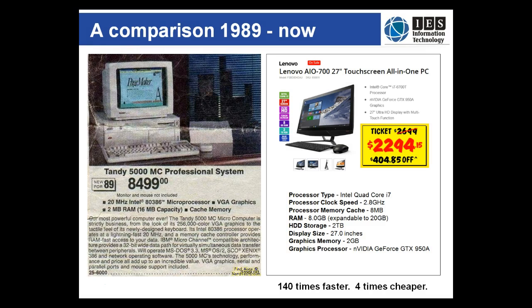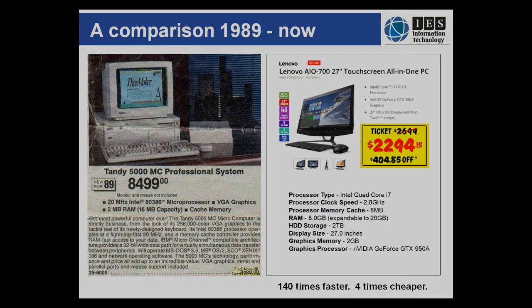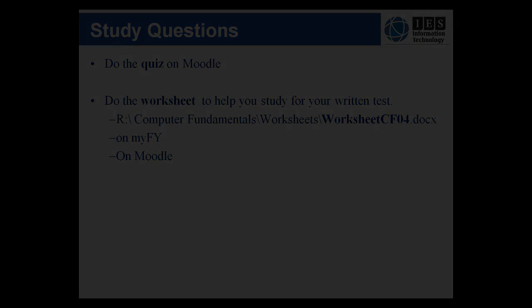Finally, let's compare two computers. The one on the left is a Tandy 500MC professional system, and in 1989 it cost $8,499. It had a 20MHz Intel processor, VGA graphics with no dedicated graphics processing unit, 2MB of RAM and could be upgraded to — wait for it — 16MB. Compare that with an all-in-one desktop computer from JB Hi-Fi: this computer is nearly 150 times faster, has much more RAM, has a dedicated graphics processor and is way, way, way cheaper than the 1989 computer. That's the end of the series of videos for Computer Fundamentals Lecture 4.